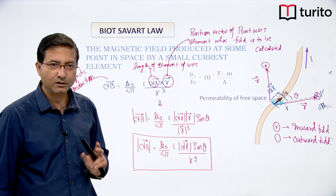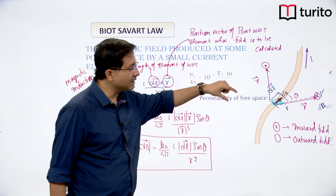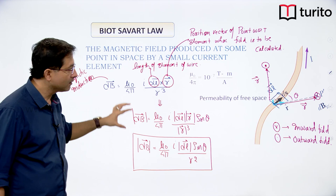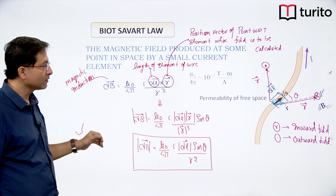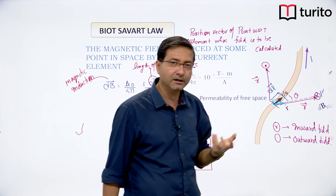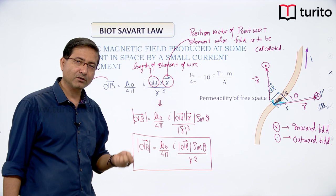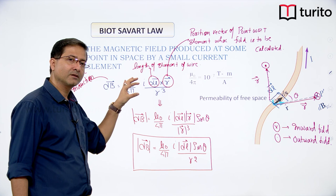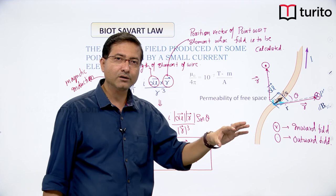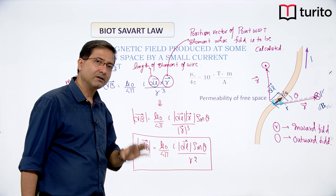Biot-Savart's law is meant for a small element. If you want the field produced by the whole wire, you need to integrate — adding the contribution of every element at that point. For any type of current distribution — straight wire, circular wire, coil, solenoid, or toroid — the starting point will always be this expression. This is the most important formula in this chapter.